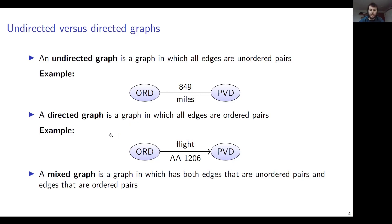Then we have directed graphs, where all edges are ordered pairs — all edges are directed. For example, when an edge represents a flight such as AA1206, this flight goes from one vertex to another, and here the order does matter. It matters where it goes from and to where it goes, so it's an ordered pair, making it a directed edge. If all edges are directed, the graph is directed.